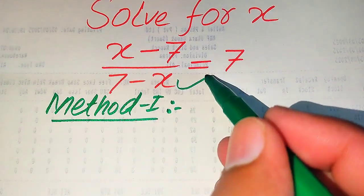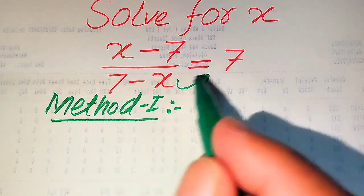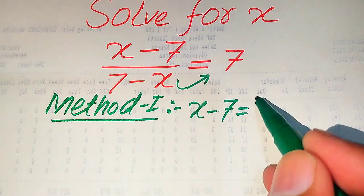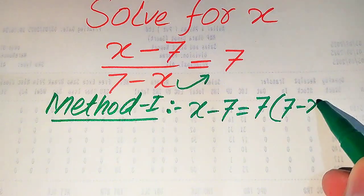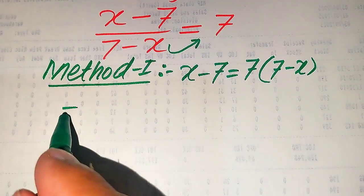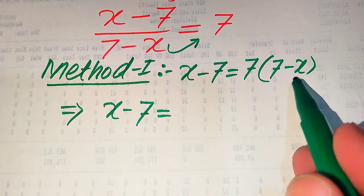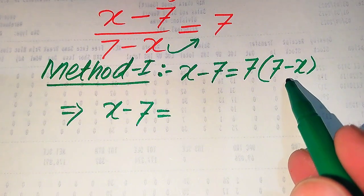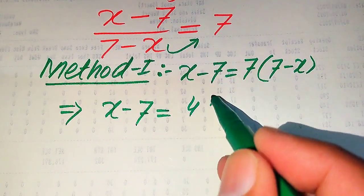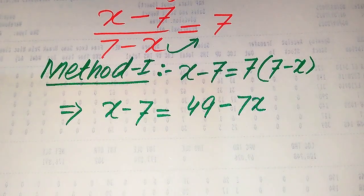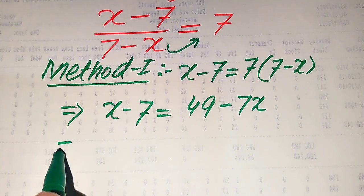In Method 1, we move 7 minus x to the right hand side. When we multiply 7 minus x to the right hand side, it will be written as x minus 7 equals 7 times of 7 minus x. Expanding further, x minus 7 equals 7 times 7, which is 49, minus 7 times x, which is 7x. Next, we move the variable terms to the left hand side and the constant terms to the right hand side.